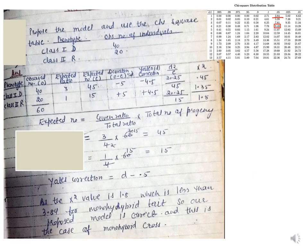This is the last problem of this lecture, and you can see that in this particular case Yates correction is applied because the degrees of freedom is 1. You can refer to any genetics book for further understanding of this topic. Thank you, students.